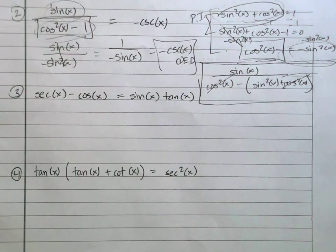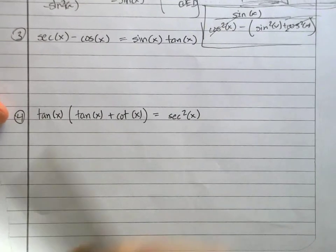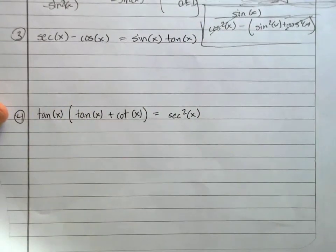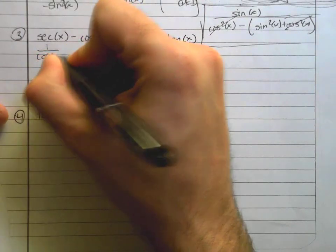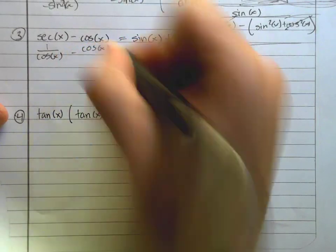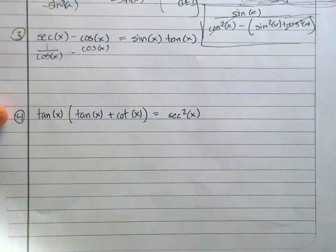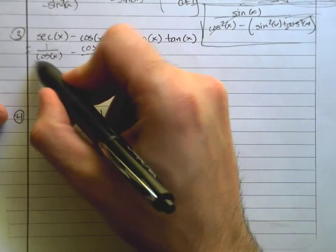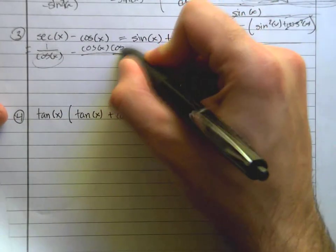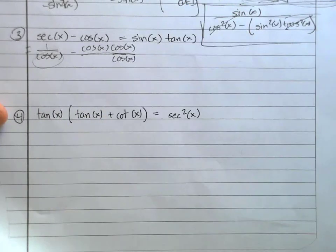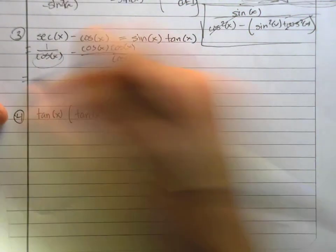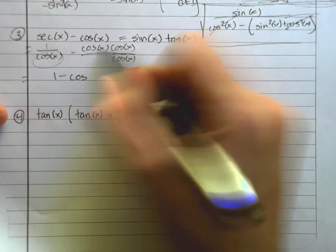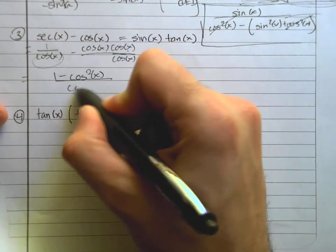Problem three is a bit more straightforward: secant minus cosine. I can rewrite secant as 1 over cosine, so I have 1 over cosine minus cosine. To combine these, I need a common denominator of cosine, so I multiply the second term by cosine over cosine. Now I can add them: that gives 1 minus cosine squared, all over cosine.